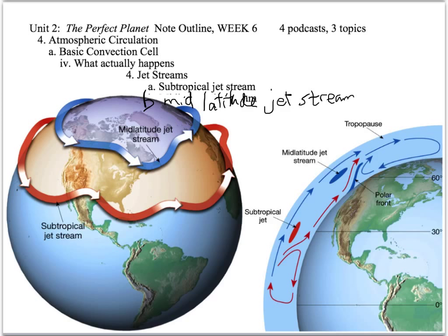It's also interesting to note that you do have jet streams — basically fast-moving pockets of air — at the place where the Hadley and Ferrell cells meet, and where the Ferrell and Polar cells meet. So you have the mid-latitude jet stream and the subtropical jet stream. Those are Earth-wide, going all the way around the planet. You can actually catch one of those on a long-distance flight and make up a lot of time.